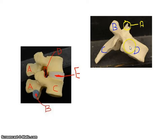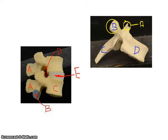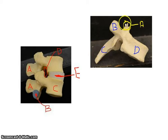From another view, you have the body of the vertebra, the articular processes — in this case superior, on top — the transverse process, and the spinous process. So again: body, articular process, transverse process, spinous process.